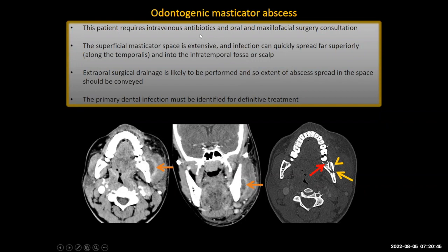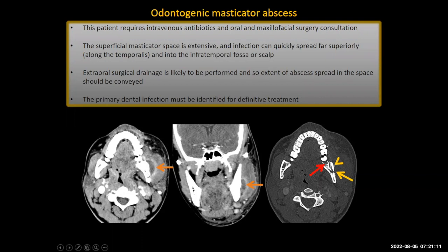This is an odontogenic masticator space abscess. This patient requires intravenous antibiotics and an oral and maxillofacial surgery consultation for drainage and definitive treatment. The superficial masticator space is extensive — the temporalis muscle reaches all the way up to near the vertex, so an abscess extending into that muscle could spread along the side of the head and get out of control fast. Extra-oral surgical drainage is likely to be performed, and the primary dental infection must be managed for definitive treatment.